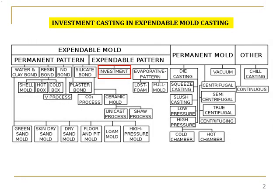Referring the chart here, in expandable mold casting, investment casting is directly placed under expandable pattern. Investment casting is a manufacturing process that is utilized to cast a wide variety of items, including high quality, high performance industrial parts. A wide variety of alloys can be used, from steel and aluminium to highly specialized materials.